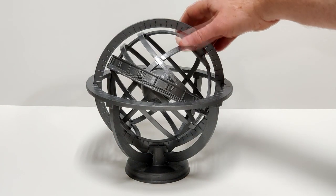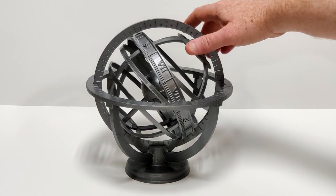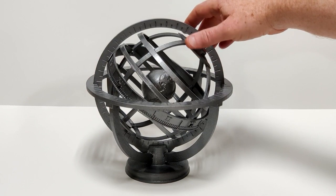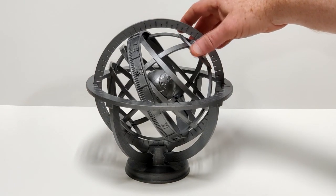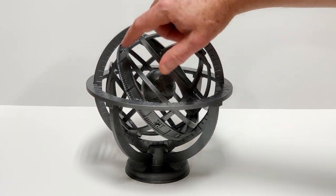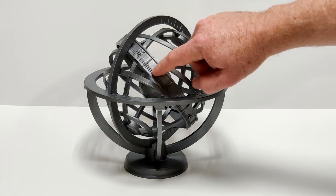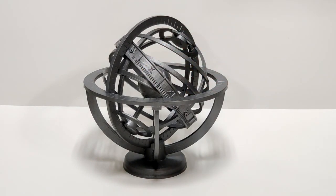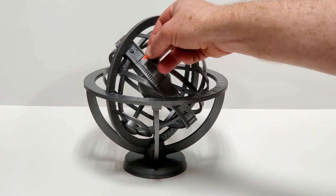So this is meant to represent the tilt of the earth for me at 45 degrees latitude. Now I find today's date, this is the 10th month roughly a third of the way through it, and I'm going to put a little sticker on there so we can find that again.